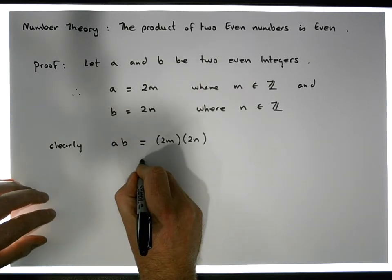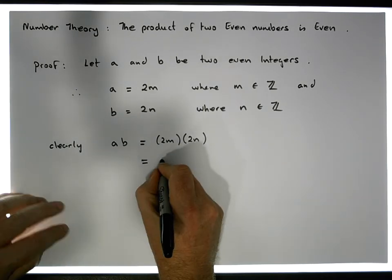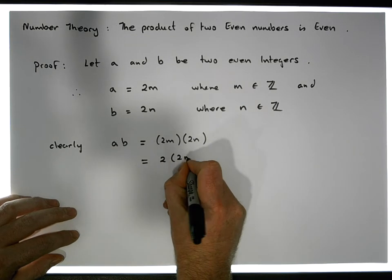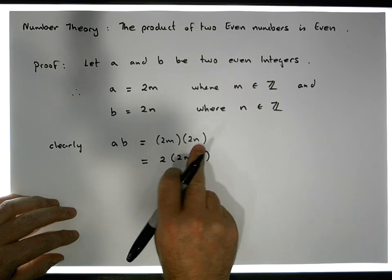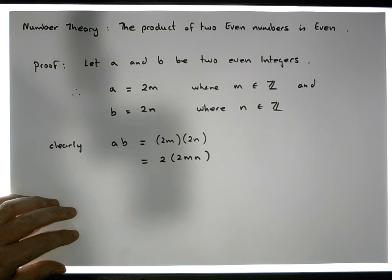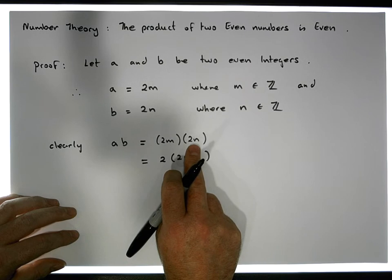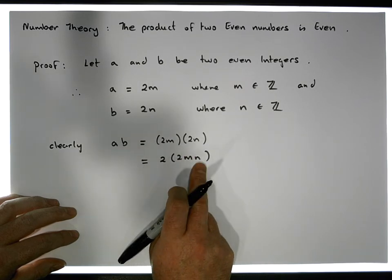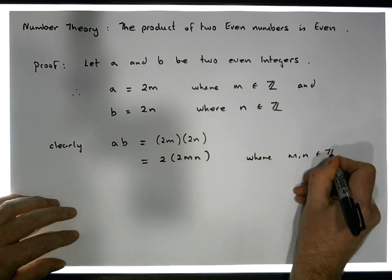And what does that give us? In relation to the associative laws and removing the brackets, this gives us 2 times 2 times M times N. All we've done is we've just rearranged it, we've commuted, and we've also applied the associative law. So what we have here is that A times B is equal to 2M times 2N, which is the same as 2 times 2 times M times N, where M and N are elements of the integers.